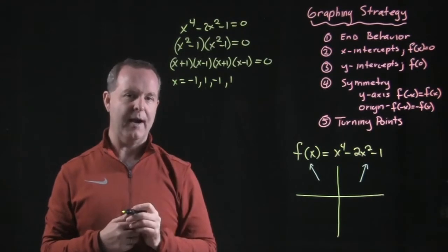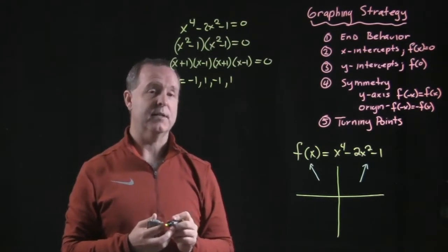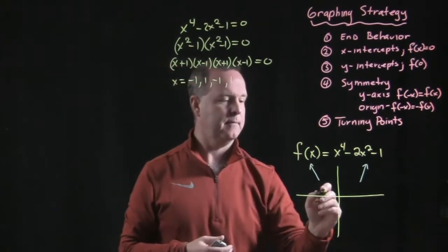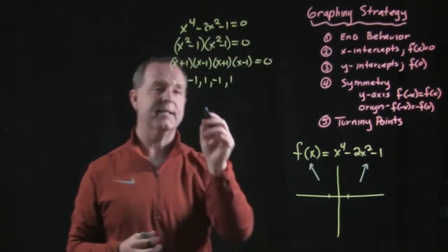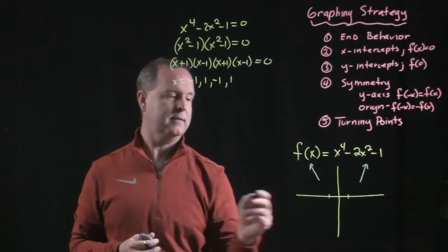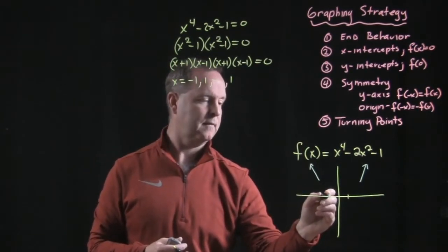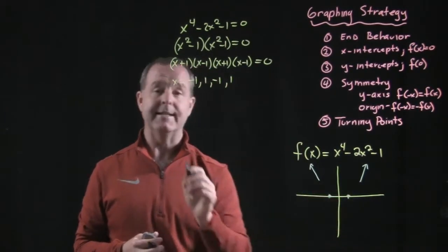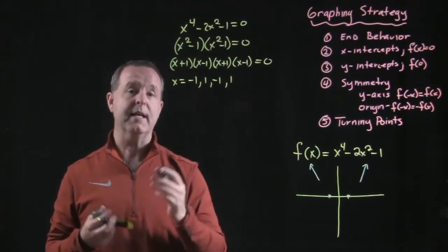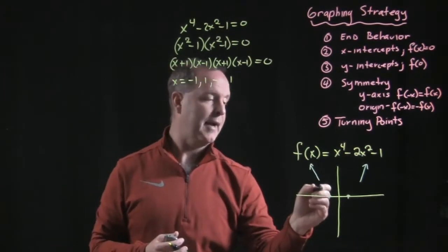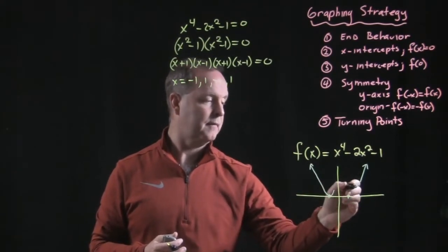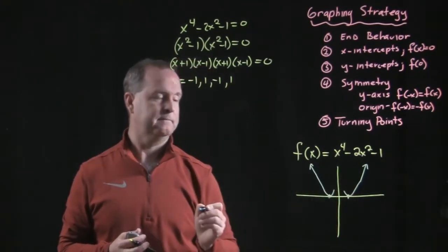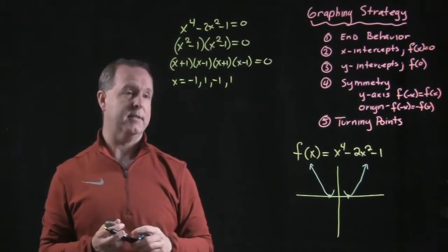How does that help us with our graph now? Well that tells us we have a graph that crosses. Let me put some tick marks on it. It has a graph that touches at these points. It doesn't cross because both of those are a multiplicity of an even amount. So I have some graph now that I can build this part of the graph. That's what step two will allow us to do.